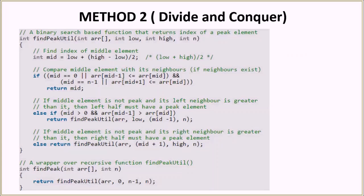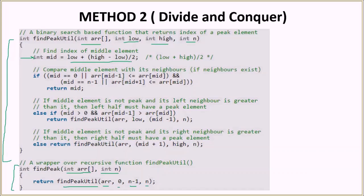Let's look at the code. We have this findPeak function, which takes as arguments the array and the size of the array. We then call findPeakUtil with the array, the starting index, the ending index, and the total size of the array. This is basically the classic binary search style of calling. We come to findPeakUtil and calculate mid as low plus high minus low divided by 2.